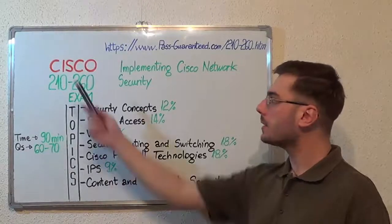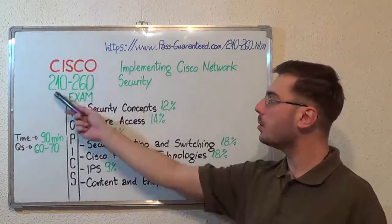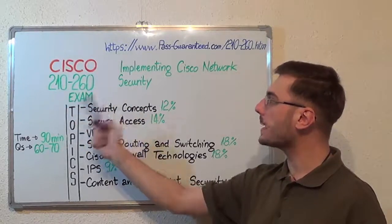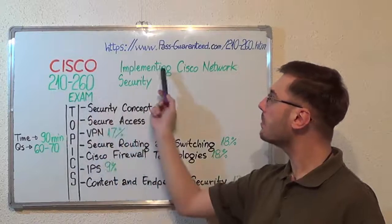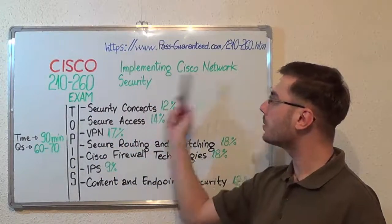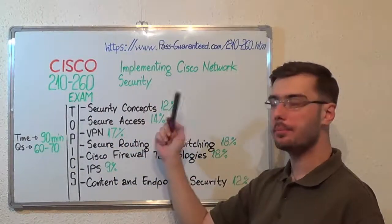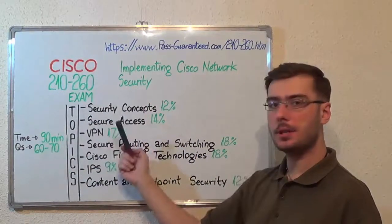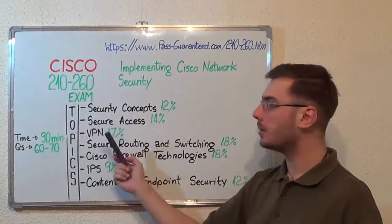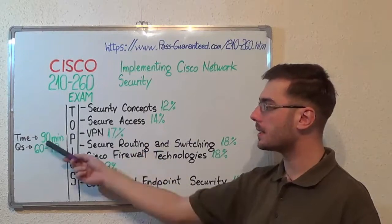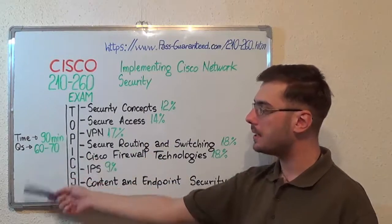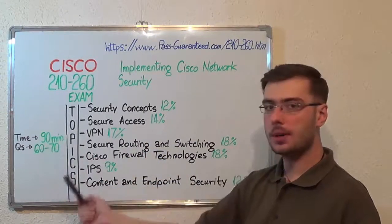Hello everyone, today I will present you the Cisco 210-260 Exam, Implementing Cisco Network Security. Here we have some basic test information. The duration of this exam is 90 minutes and there are between 60 to 70 questions.